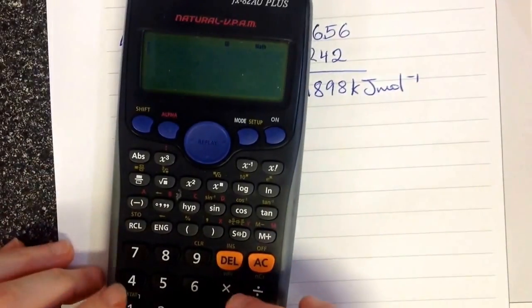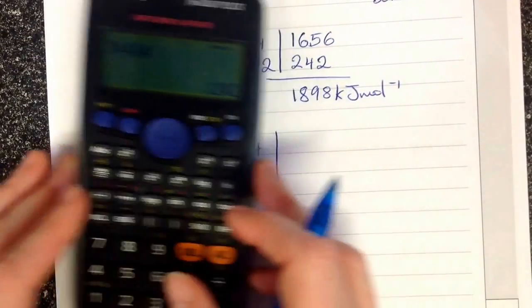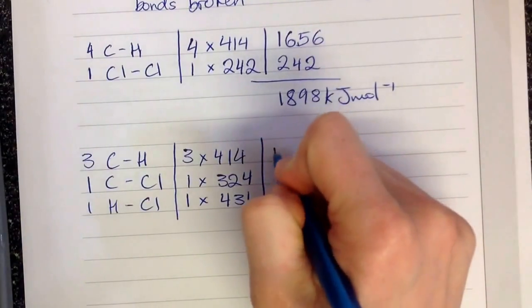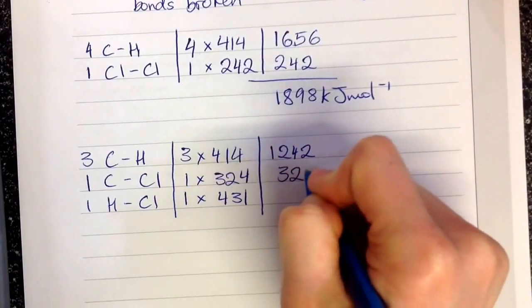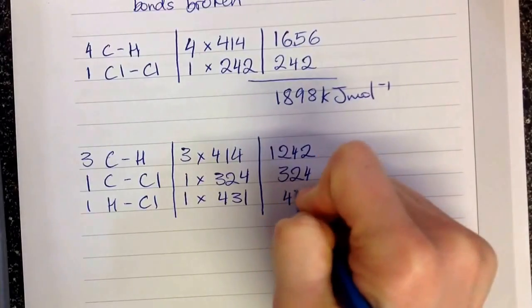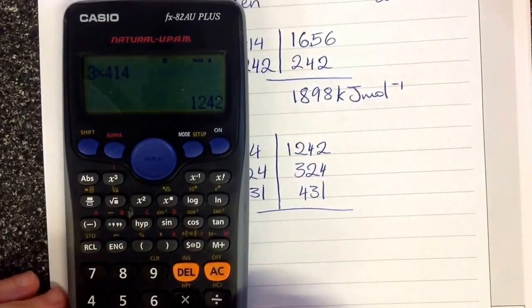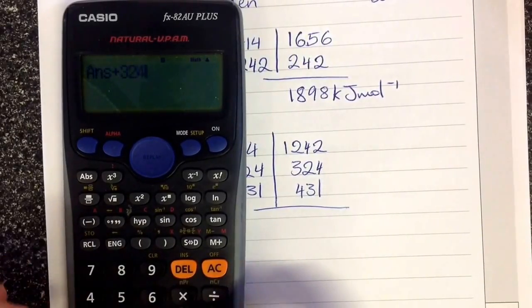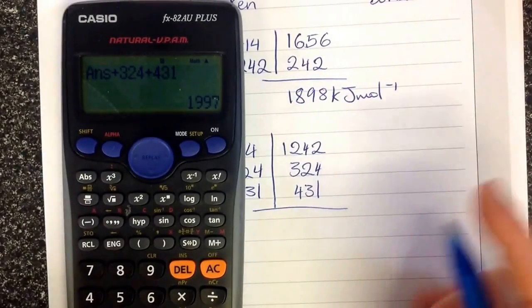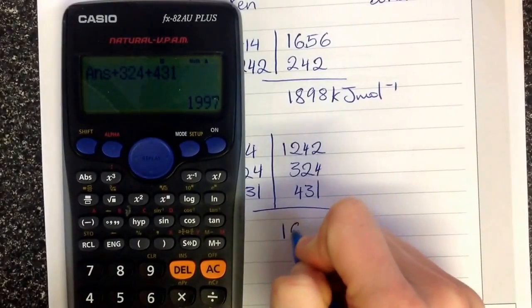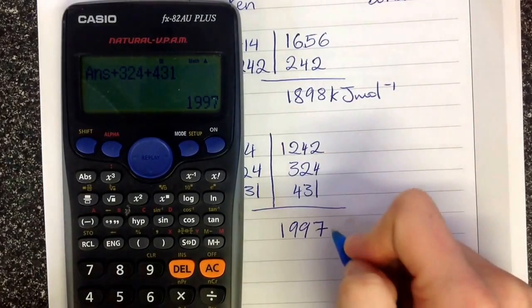3 times 414 equals 1,242. Add those all together. We have 324 plus 431. I had left 1,242 in my calculator and that gives us 1,997 kilojoules per mole.